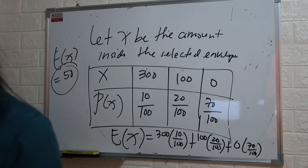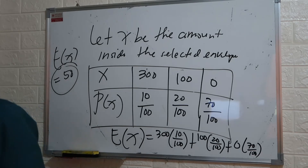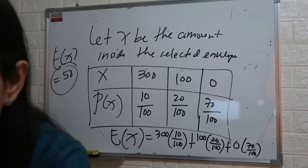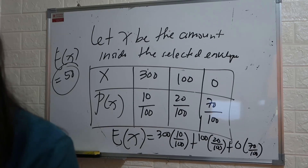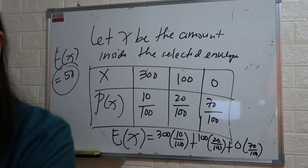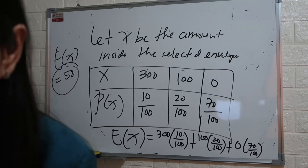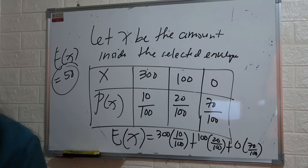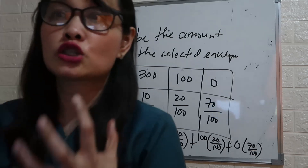So the expected value is 50 pesos. What does 50 pesos mean? That is the fair price to pay to be able to select one envelope from the urn. So for each selection, the fair price is 50 pesos. Whether you choose an envelope with 300 or 100, the fair price to pay for the chance of selecting one envelope is 50 pesos. That's how we solve expected value.